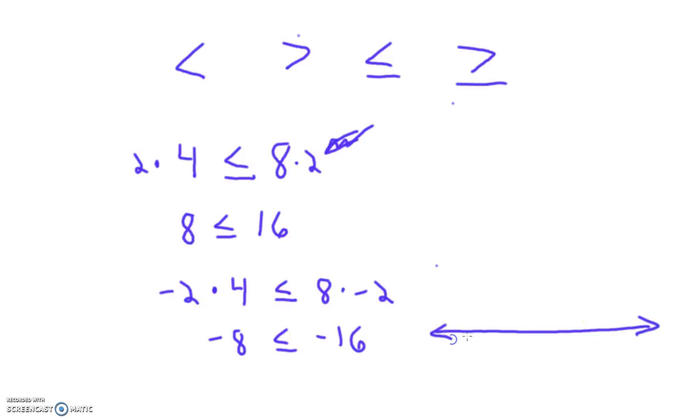So if you look at it from a number line perspective, we were at eight compared to 16, and it was less than 16. But when you multiply by negative two, we now flip to this side, the left side of the number line. And now if we have a lesser amount, the negative eight,